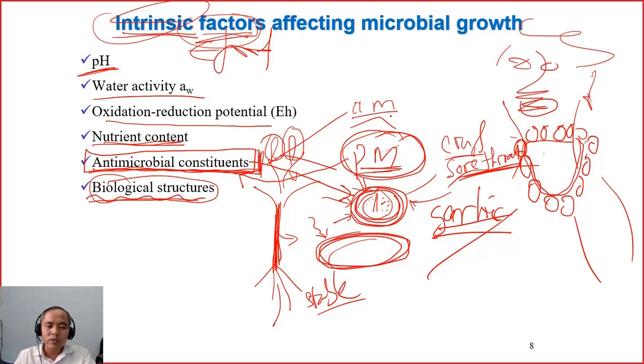Or in animal material, there are also antimicrobial constituents, because when the animals are alive, they need to prevent the penetration, invasion of microorganisms, so they always have a defense system, or some defense components in the body. Yeah, but normally plants have more than the animals,